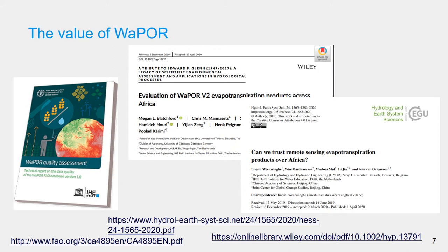Since the launch of version 1 of WAPOR, several reports and papers have been produced which evaluate the different layers of the database. The WAPOR quality assessment report published by FAO and IHE Delft provides a comprehensive evaluation of all WAPOR layers of version 1. Blatchford and Weerasinghe provide a detailed evaluation of the actual evapotranspiration layers by comparing them to other remote sensing products and to ground observations. In this presentation I will present a snapshot of the conclusions from these publications, focusing on the key layers important for calculating water productivity, namely biomass, water production and evapotranspiration. I will also reflect on the water productivity layer provided in the WAPOR portal.